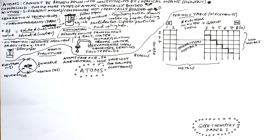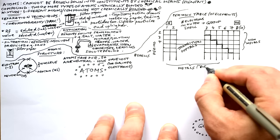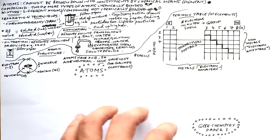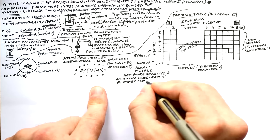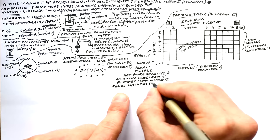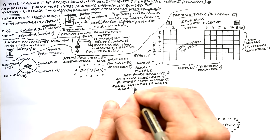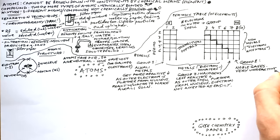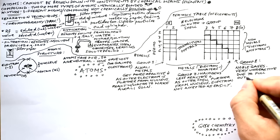In the middle we have the transition metals — generally heavier and with higher melting points further down. Everything to the left of the staircase is a metal — metals are electron donators. To the right are non-metals — electron acceptors. Group 1 (alkali metals) get more reactive going down because the outer electron is further from the nucleus, requiring less energy to remove. Group 7 (halogens) get less reactive going down. Group 8/0 (noble gases) are very unreactive because they have a full outer shell.